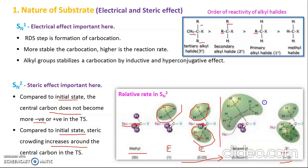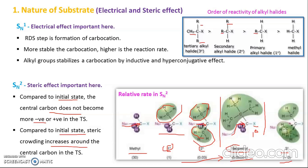An important exception: the neopentyl compound is primary (one degree) but its rate in SN2 is very low because the nucleophile cannot easily approach the carbon bearing the leaving group. So don't blindly follow that the relative rate in SN2 always simply decreases from primary to secondary to tertiary. You must consider the structure — always write the substrate structure in detail with all bonds, and only then can you correctly conclude whether the reaction rate will be high or low.